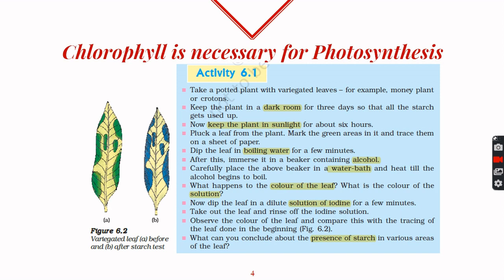Then we put the boiled leaf inside a beaker containing alcohol. Alcohol is an organic solvent and can dissolve organic chlorophyll or other pigments. However, alcohol is highly inflammable, so it has to be heated indirectly using a water bath. After some time, the color of the alcohol becomes green while the color of the leaf becomes white.